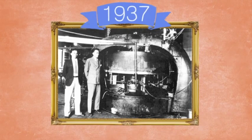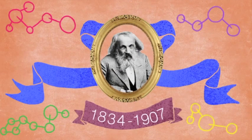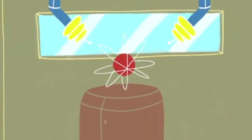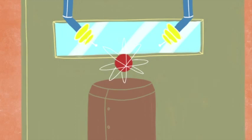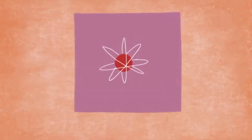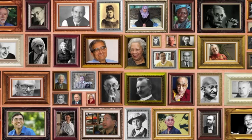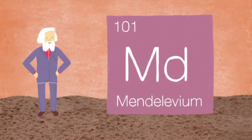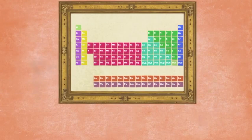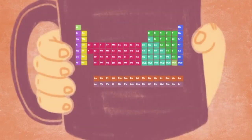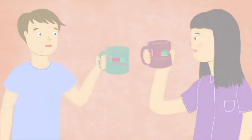Not only did Mendeleev nail gallium, he also predicted scandium, germanium, rhenium, and the element he called eka-manganese — now called technetium, which was so rare it couldn't be isolated until it was synthesized in a cyclotron in 1937, almost 70 years after Mendeleev predicted its existence. He died in 1907 without a Nobel Prize, but in 1955 scientists at UC Berkeley created 17 atoms of a new element. It filled spot 101 on the periodic table and was officially named mendeleevium in 1963.